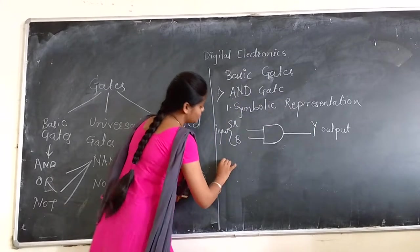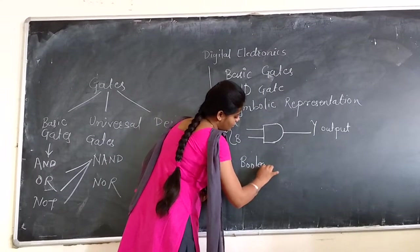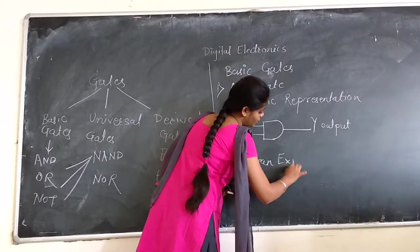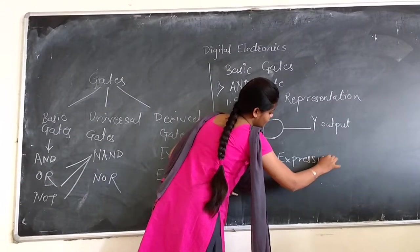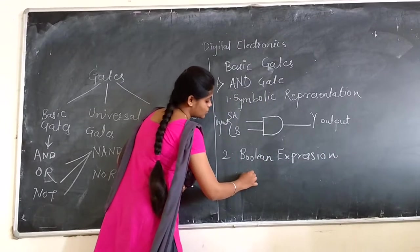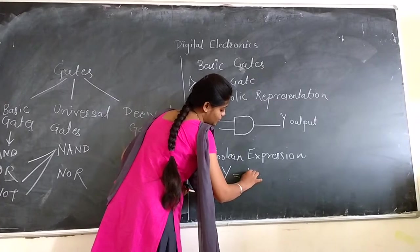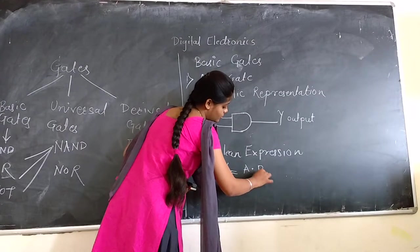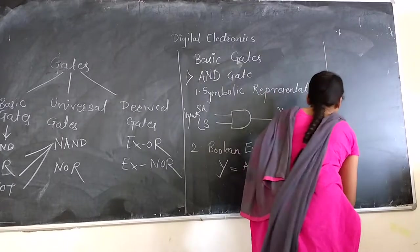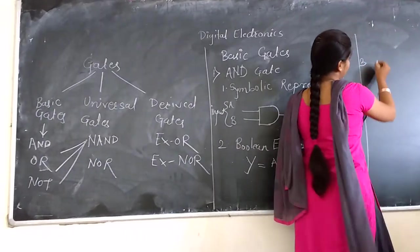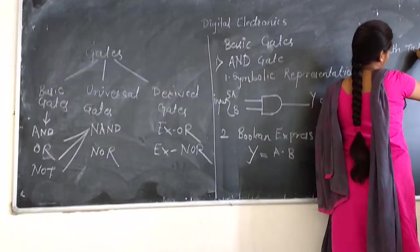Secondly, you should know the Boolean expression of AND gate. From the Boolean expression we can derive the truth table of AND gate.